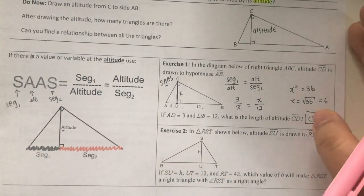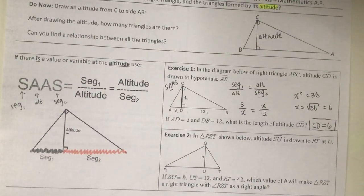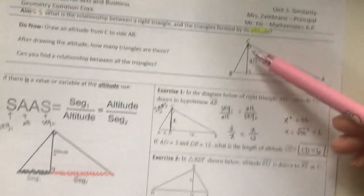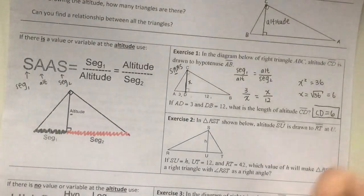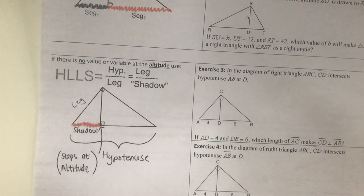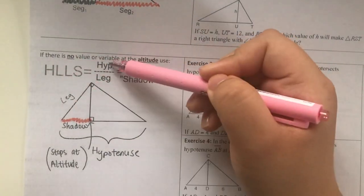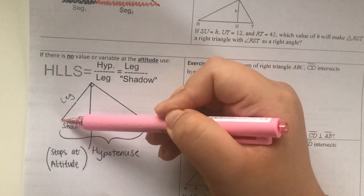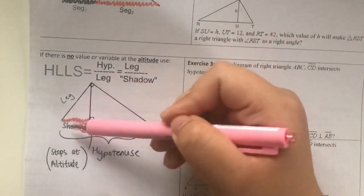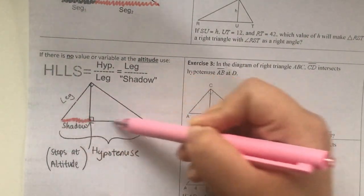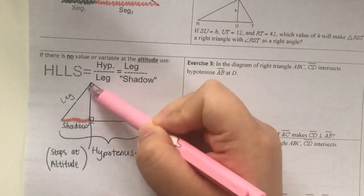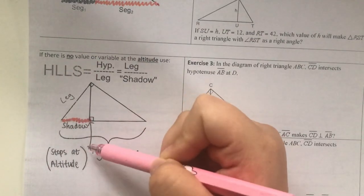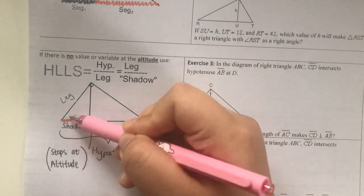Now what if I don't need to find out what altitude is, because I do have other line segments in the triangle. If I don't need altitude, I'm going to use HLLS. HLLS represents H for hypotenuse - the longest side of the triangle. We're looking at the big triangle.